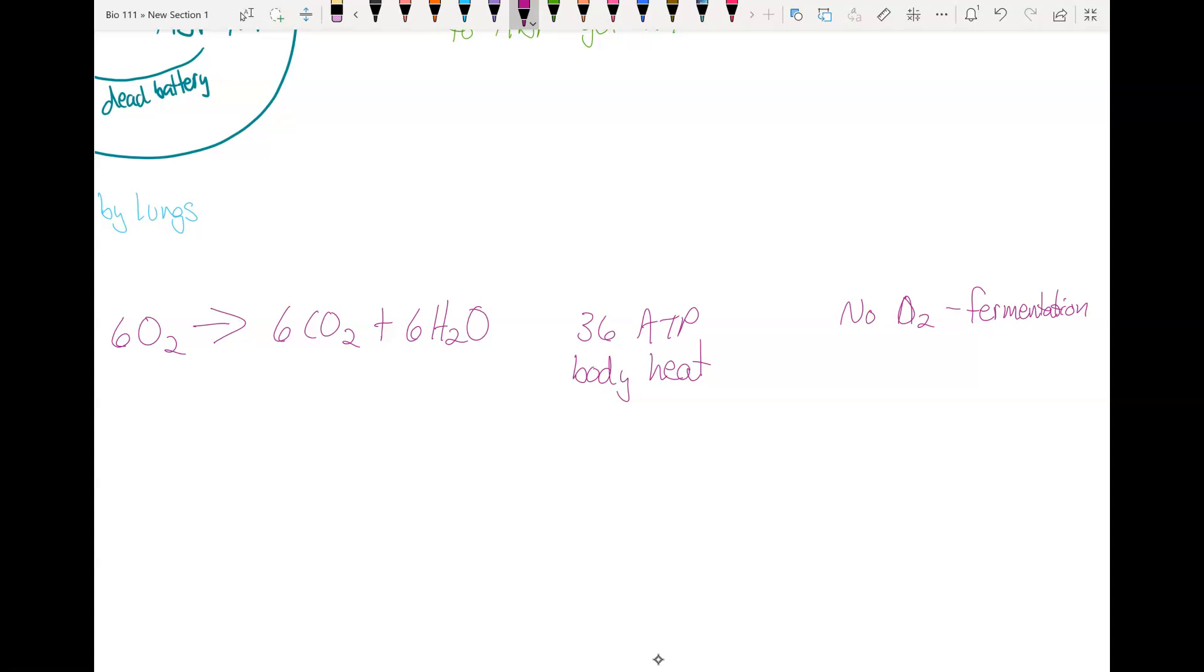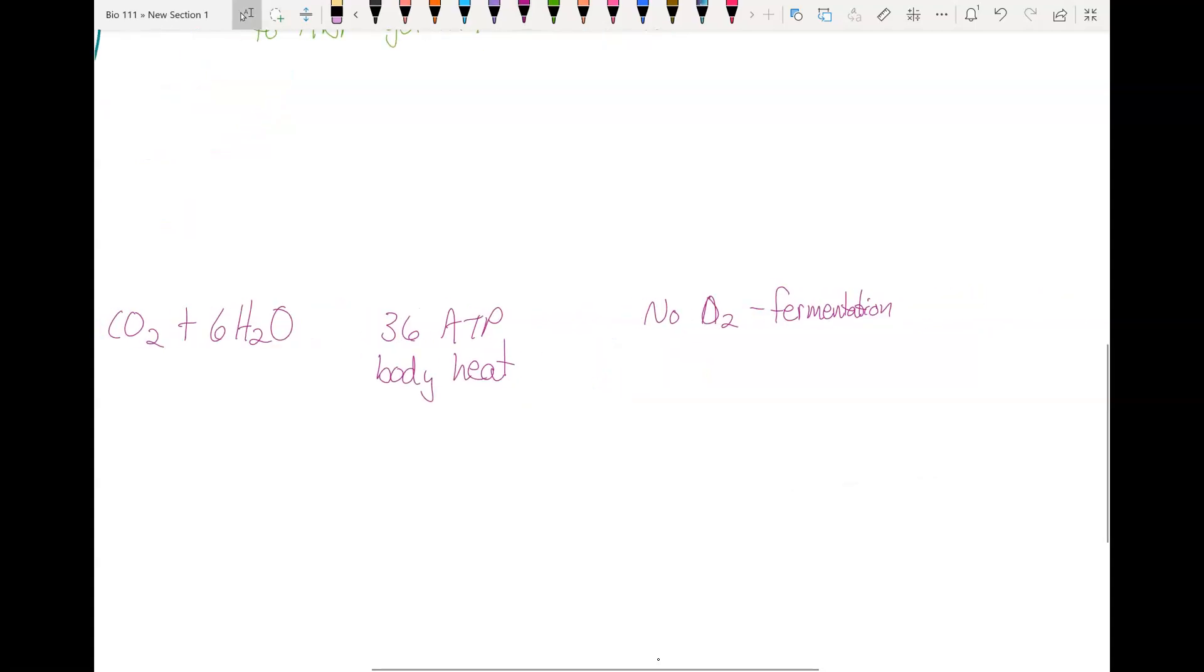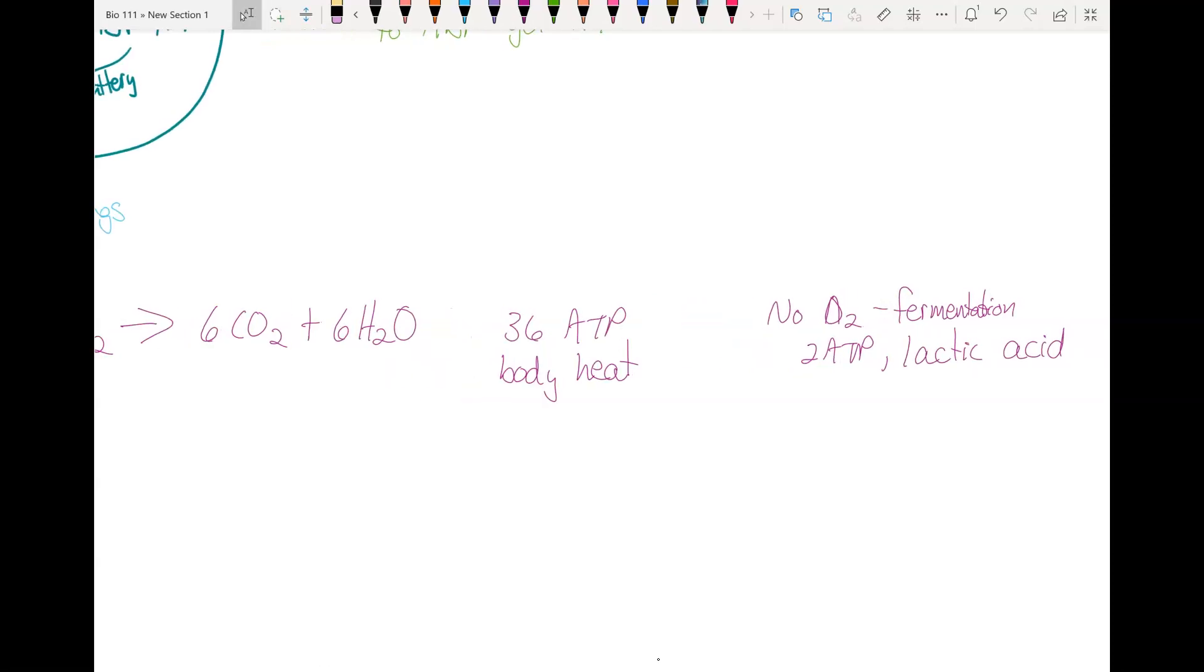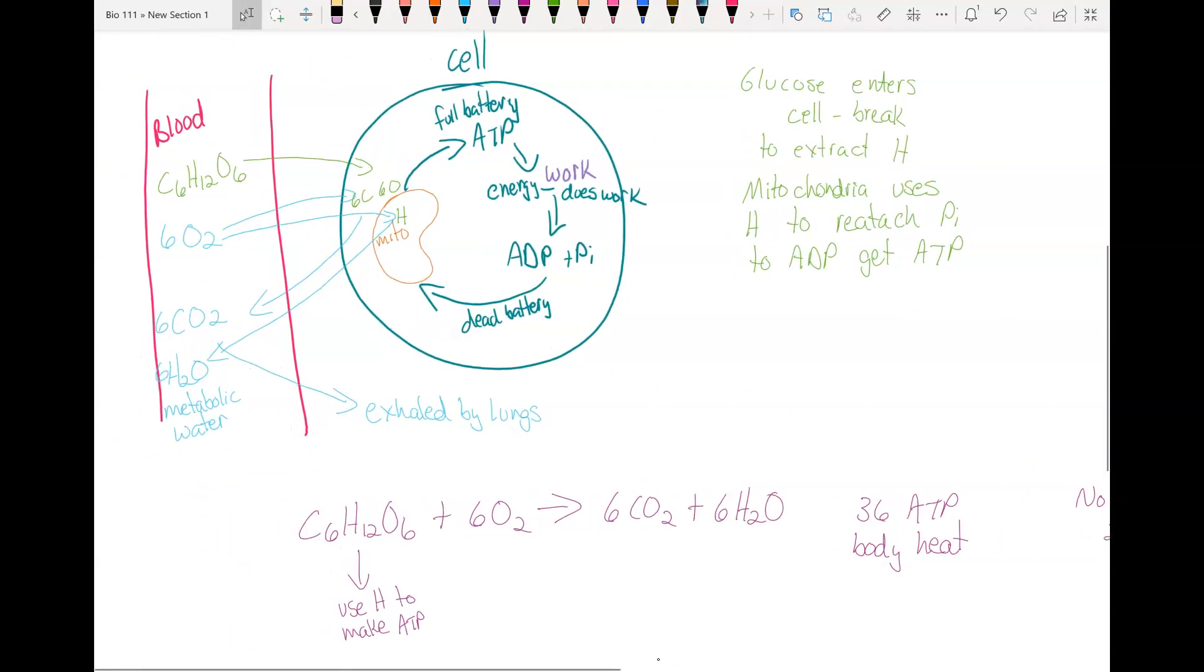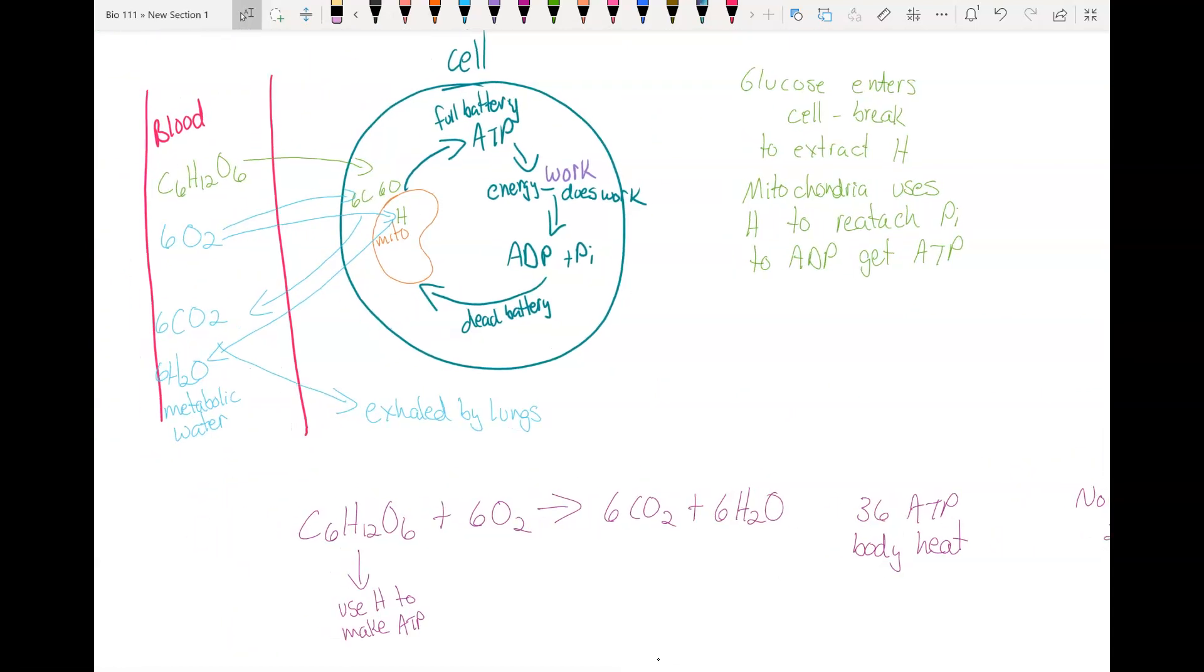When humans do fermentation, you get lactic acid. If there's no oxygen, you do fermentation and you only get two ATP from this process, and you also get lactic acid. If you didn't have oxygen, you would only get two ATP. That's not enough to keep your cells functioning. So that's why you would die without oxygen, because you wouldn't be able to make enough ATP to keep your cells functioning.